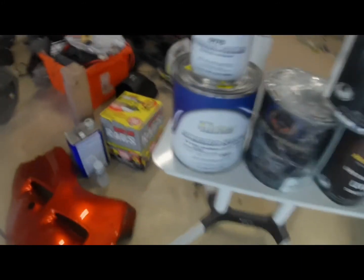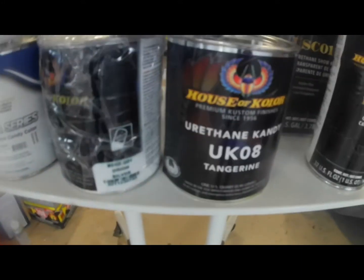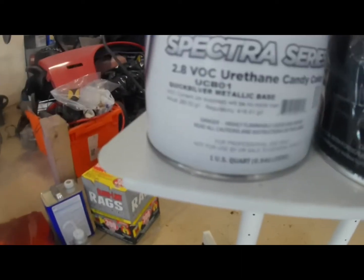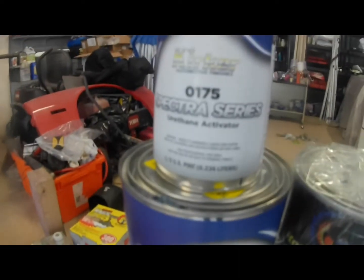This will be using two different base coats, one from Kirker, another from House of Colors. Kirker is a Quicksilver and it's a four to one mix ratio, and then House of Colors is Orion Silver and it's a two to one mix ratio.